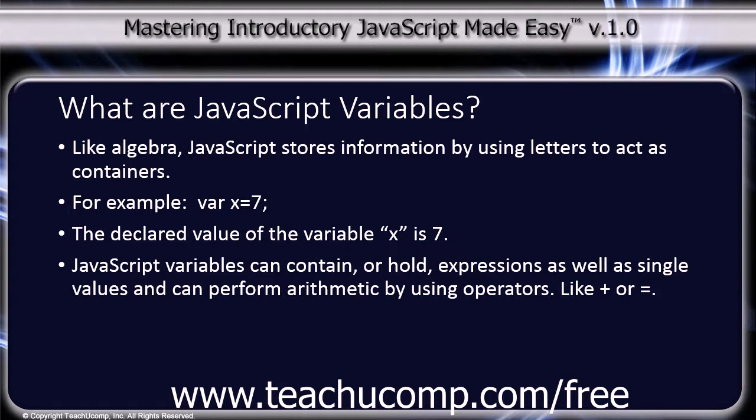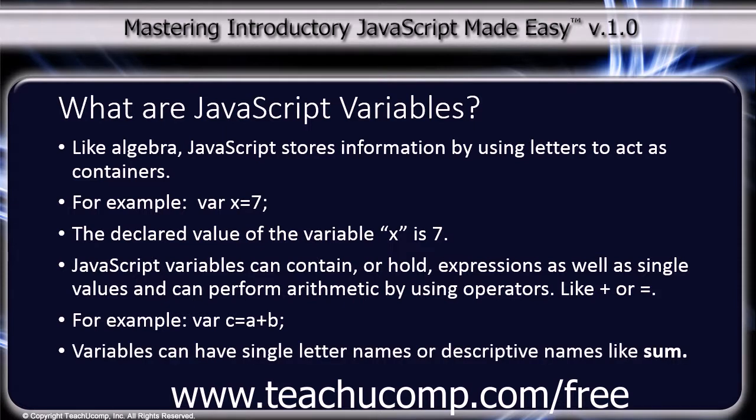JavaScript variables can hold expressions as well as single values. This allows JavaScript to perform arithmetic by using operators like equals and the plus sign. For example, var c = a + b;